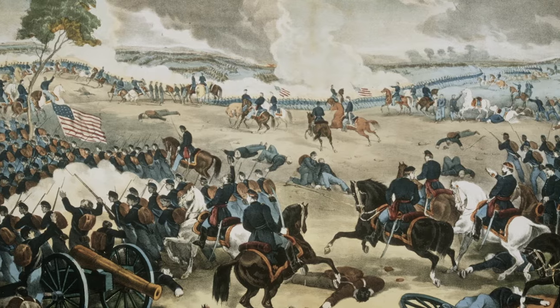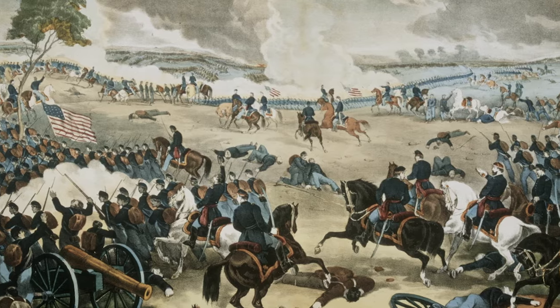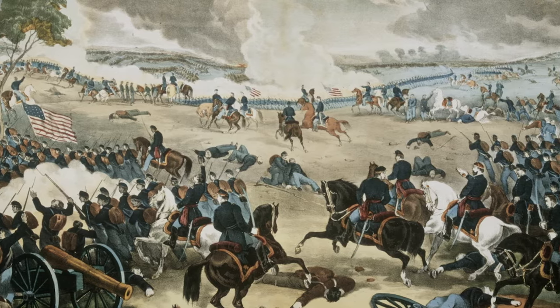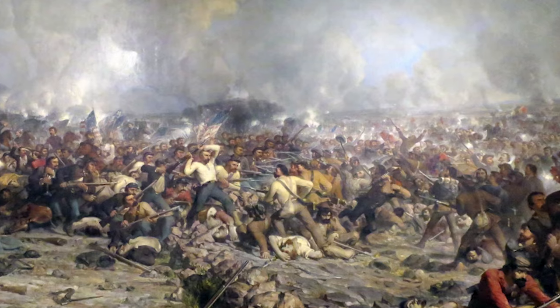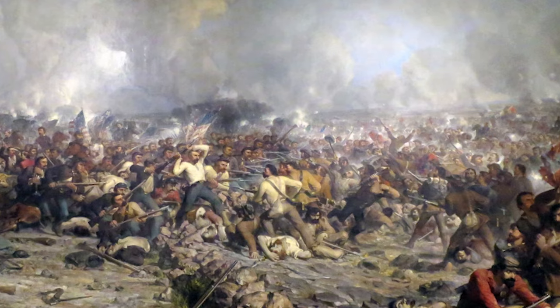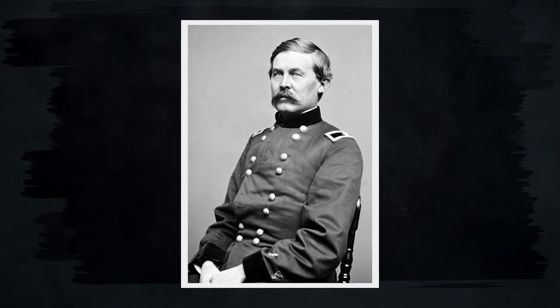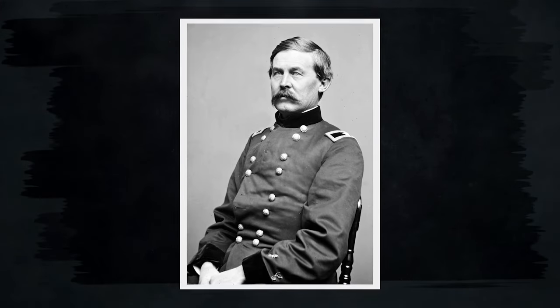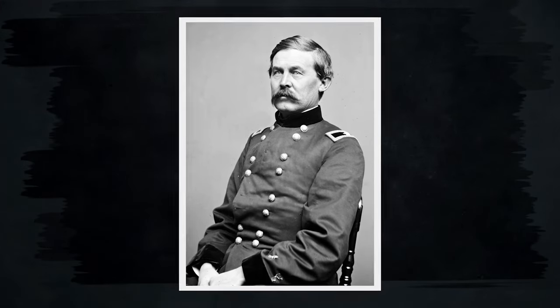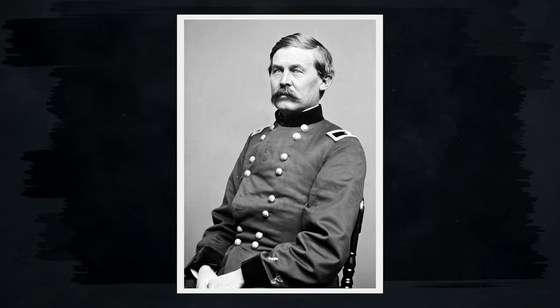Buford dismounts his men along McPherson's Ridge to stop the Confederates coming down the Chambersburg Pike. His troops delayed them long enough to send word back to General Reynolds, who pushed troops forward, allowing Union forces to seize the high ground. By the time Confederates entered Gettysburg, Union forces had seized the critical Cemetery Hill and Cemetery Ridge. Gettysburg turned the entire tide of the war as a result — all through the actions of Major General John Buford. That is the power of decentralized command.